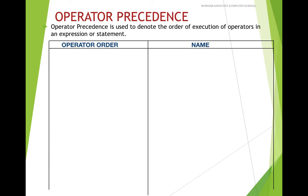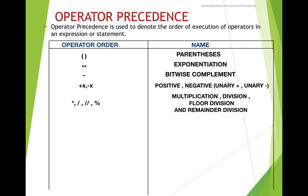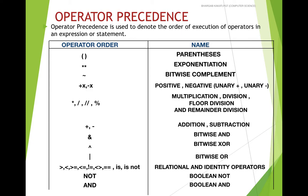Let us see the operators and their precedence. The first precedence is of the bracket, known as parenthesis. Next is the exponentiation operator. Third, we have the bitwise complement operator. After that, unary plus and unary minus both have the same priority. Next, multiplication, division, floor division, and remainder division have the same priority. Then plus and minus have the same priority. Then bitwise AND, then bitwise OR, then relational and identity operators, then the boolean NOT, then AND, and finally the boolean OR operator. The operator which is above in the table has a higher priority; the order is from top to bottom.